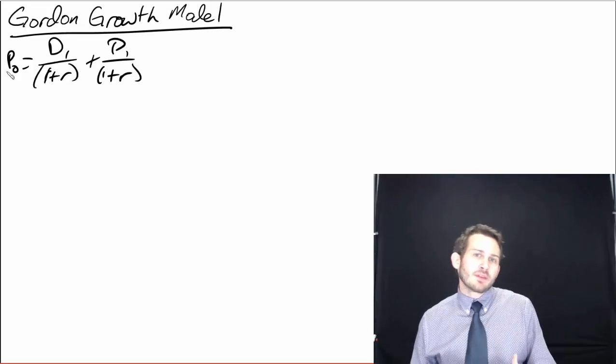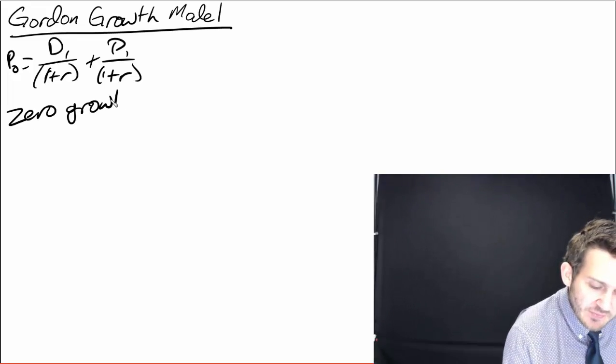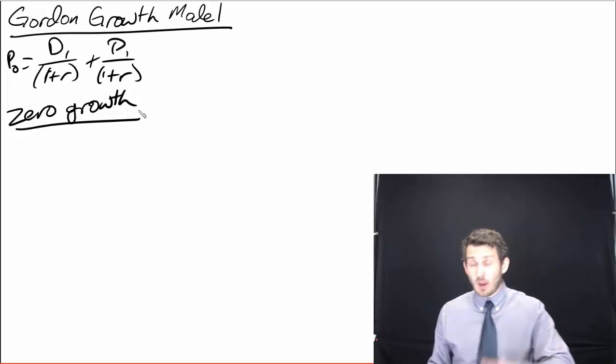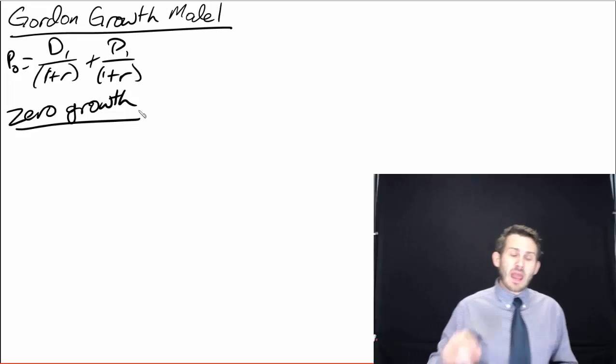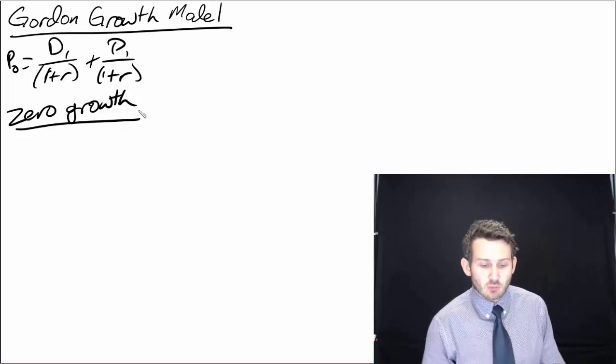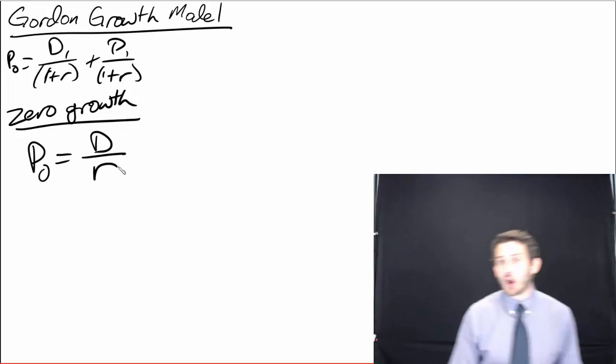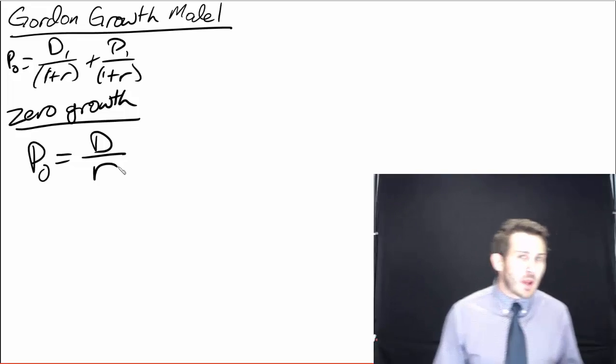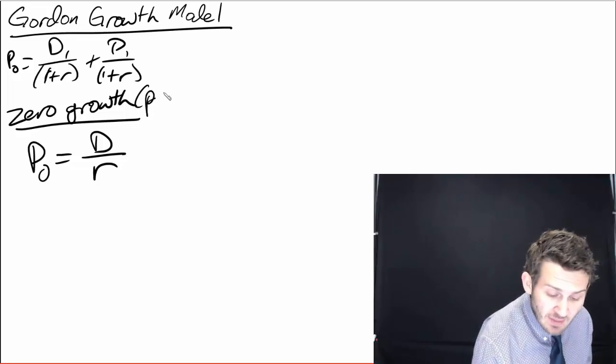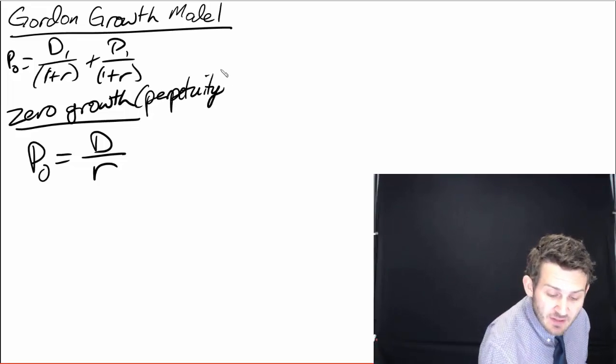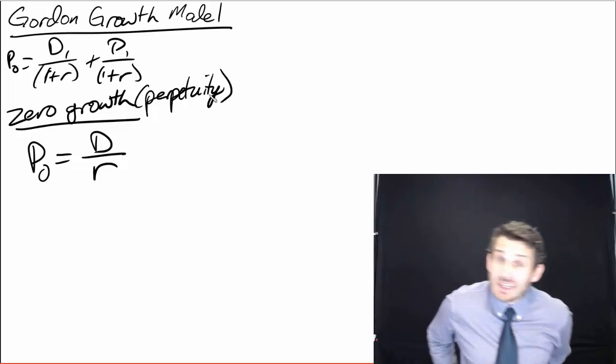So what we're going to start off with is assuming a zero growth condition. Now if we have zero growth of dividends, and keep in mind we're talking about growth in the amount that is actually paid out to shareholders, our price would be equal to D divided by R. Now why should you already know that equation? It's because that is just a perpetuity formula. That dividend payment is constant over the life of it, we just discount all those back, D divided by R.